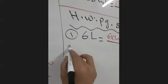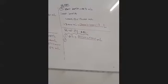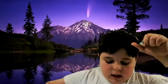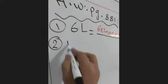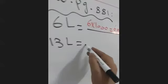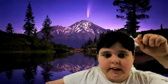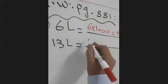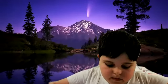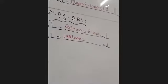Question two: 13 liters equals how many milliliters? To turn from liter to milliliter, we multiply by 1,000. So 13 multiplied by 1,000 equals 13,000 milliliters.